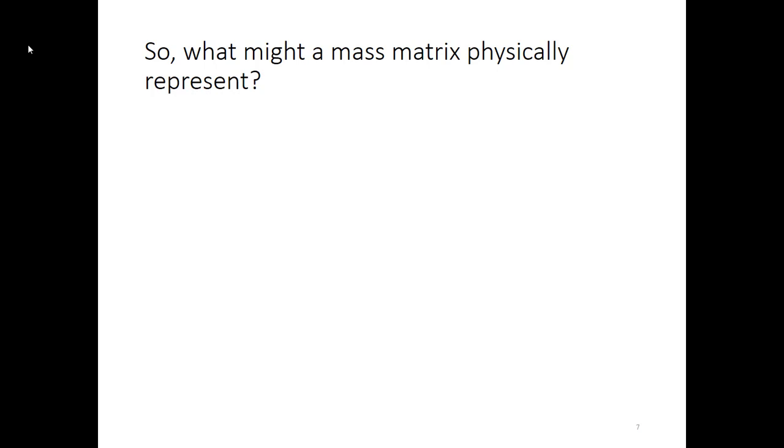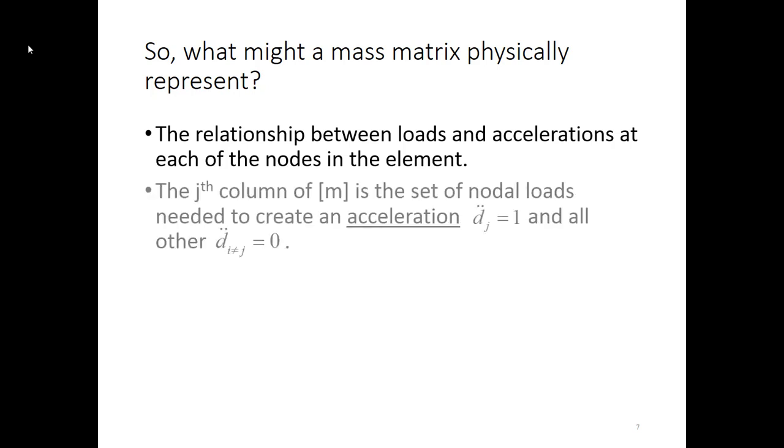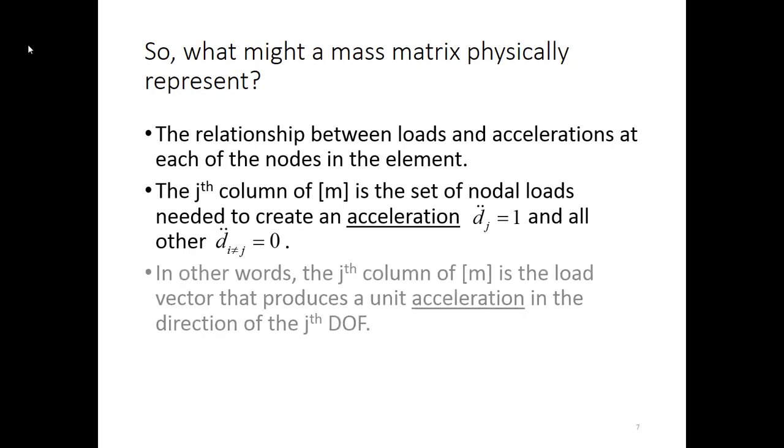Let's take that physical interpretation over to the mass matrix. Assume things are similar. Well, fundamentally, the mass matrix represents the relationship between loads and accelerations at each of the nodes of the element. The relationship between loads and accelerations is something that we call mass. So it makes sense that this is a mass matrix. But what are the columns representing? Well, just like with the stiffness matrix, a particular column, let's call it column 3, of the mass matrix is the set of nodal loads that are needed to create an acceleration of magnitude 1 in, let's see, I said this was the third column, so it's in the third degree of freedom direction. And all of the other accelerations will be zero. So that's what that column means. In other words, it is another load vector, but now it produces a unit acceleration in the direction of whatever degree of freedom that column is associated with. That's what the mass matrix is.